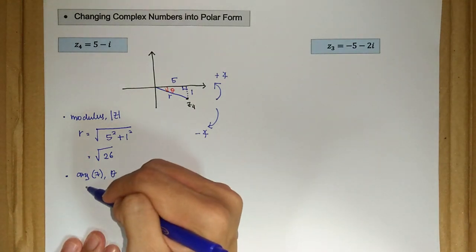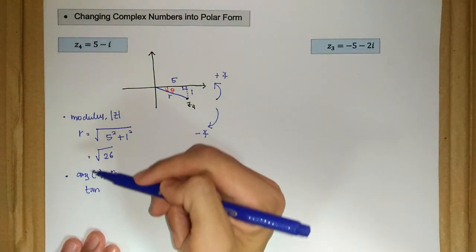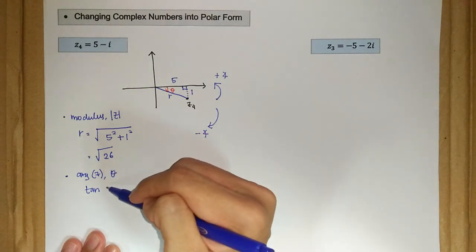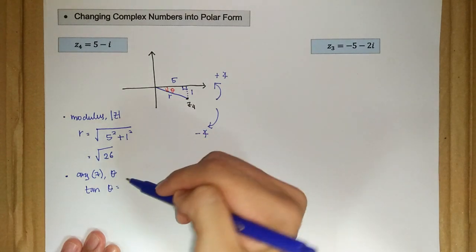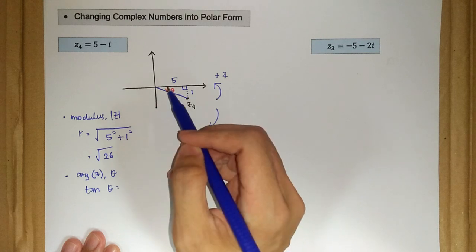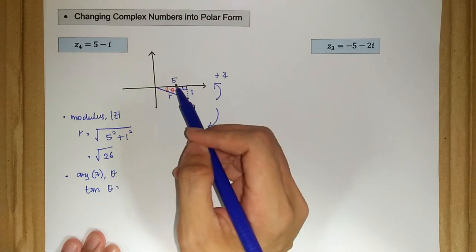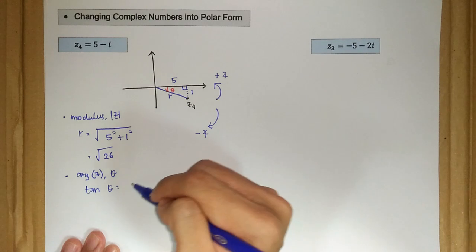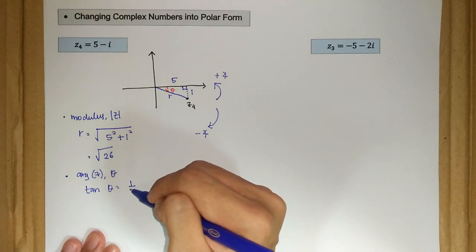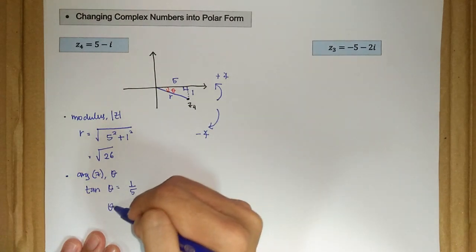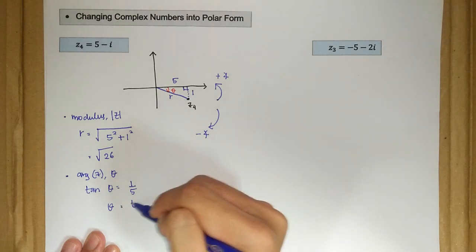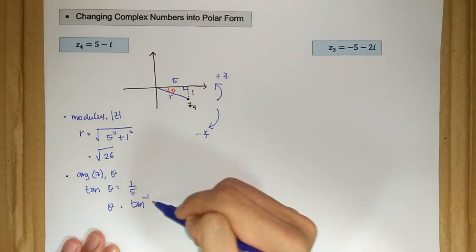So argument z, theta here, we just take the simple trigonometric ratio. So tan theta is basically equal to opposite over adjacent here, so 1 over 5. So theta is equal to arctan 1 over 5.